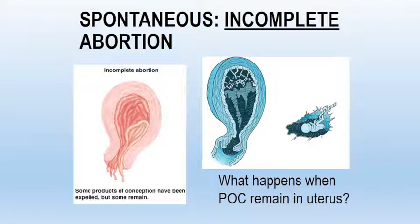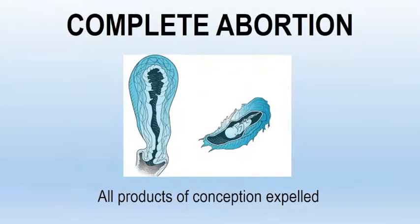An incomplete abortion is when products of conception have been passed; however, some parts still remain in the uterus, and this will cause continued cramping and bleeding. When products of conception remain in the uterus, we end up having to do surgical intervention to evacuate it. A complete abortion is when the woman is able to expel all products of conception on her own and there is no need for any type of surgical or medical intervention.